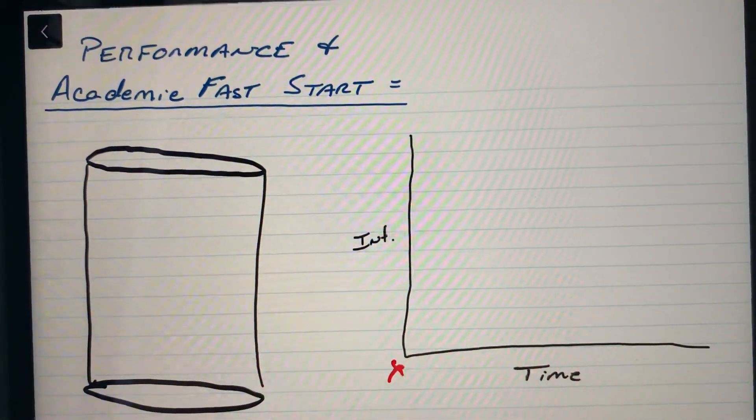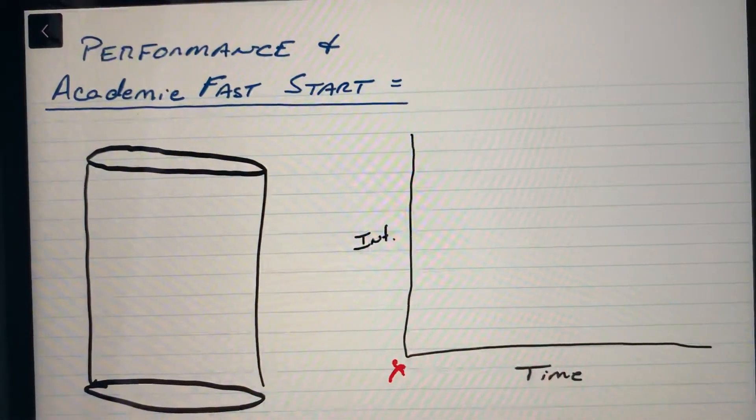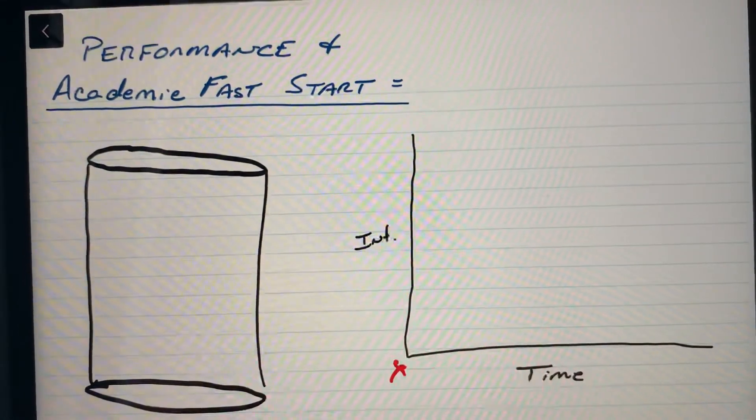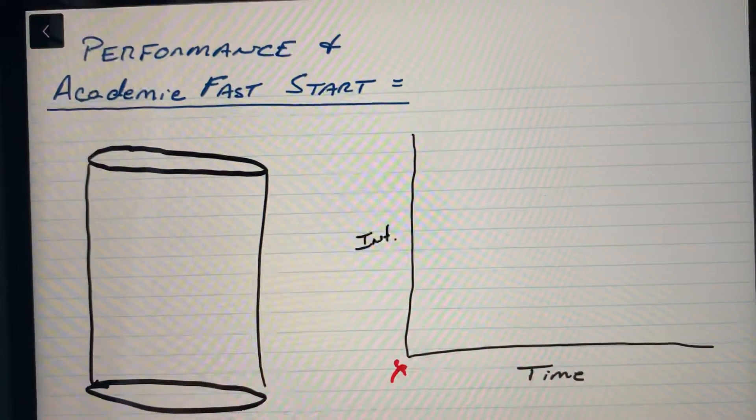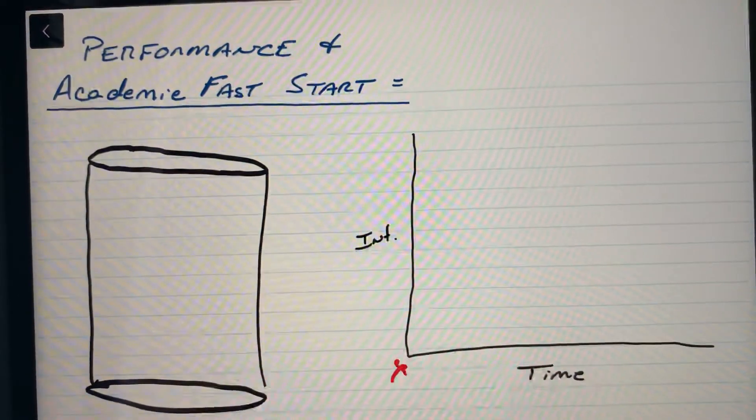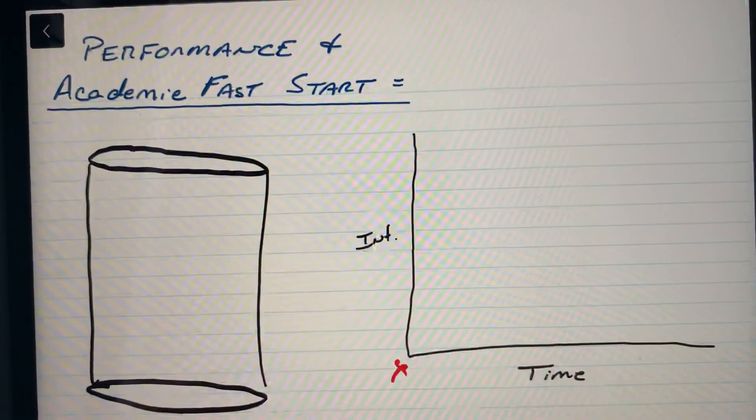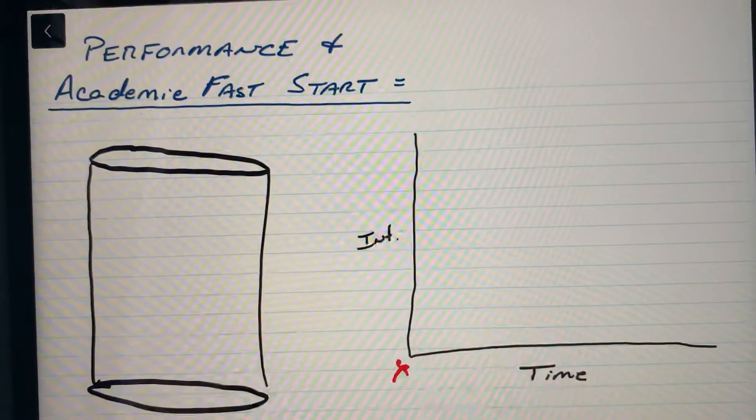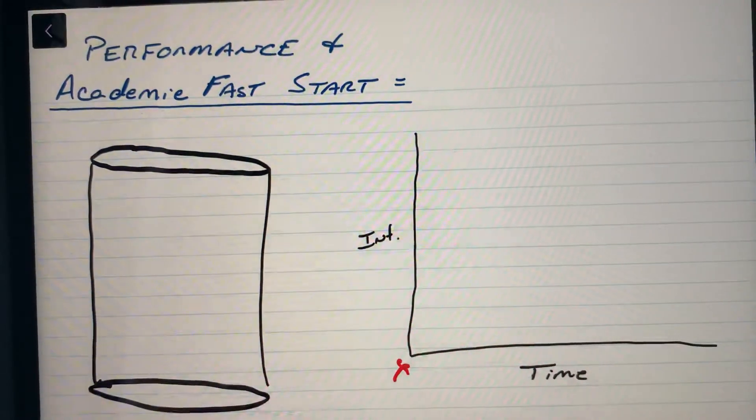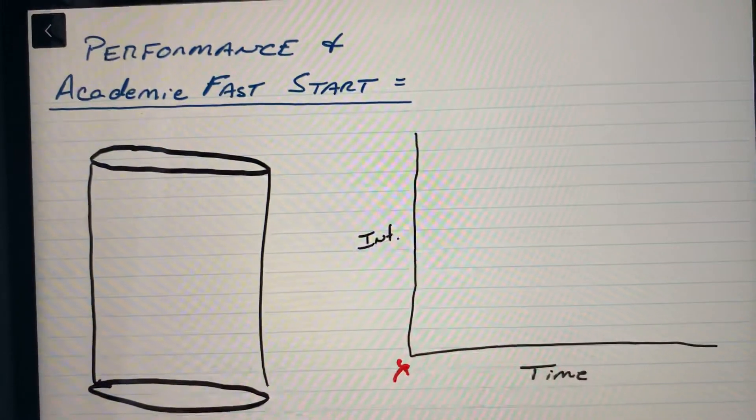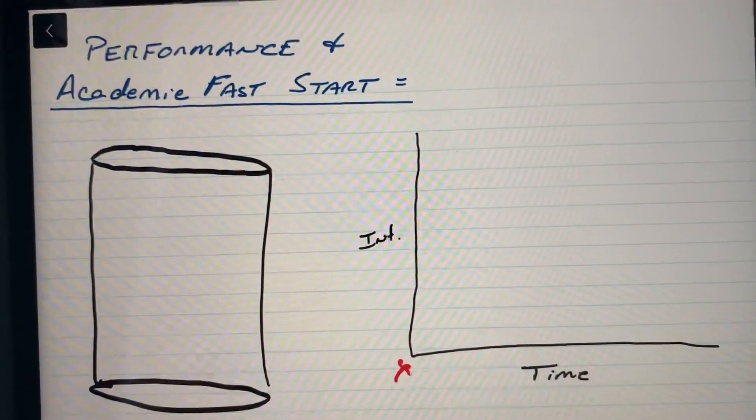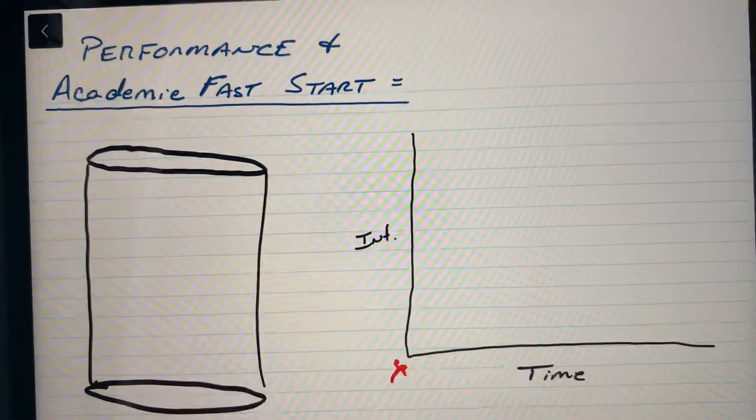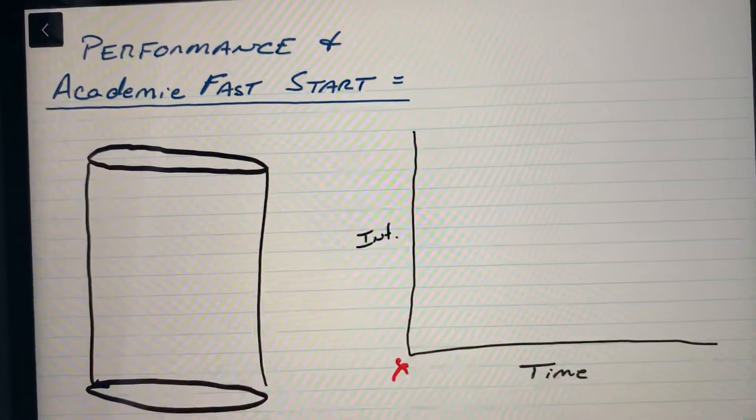We're talking performance and an academic fast start, and the reason we're spending so much time on that this week is because there are so many things outside of physical preparation that go into performance on the field or court. We can really capitalize on opportunities that come our way, and right now the opportunity is maximizing and taking advantage of our academics so that later in the semester we can really focus on our physical development and preparation for our seasons to come.